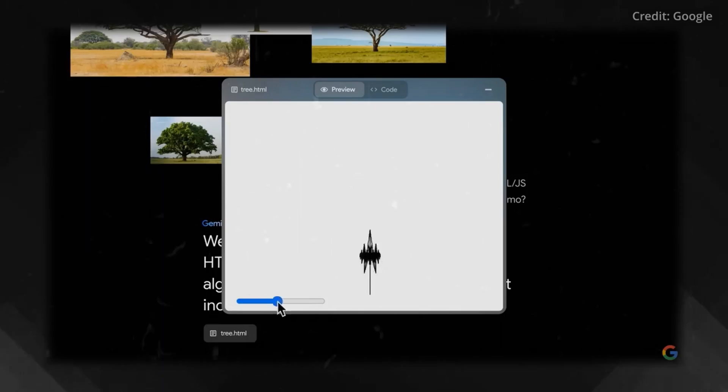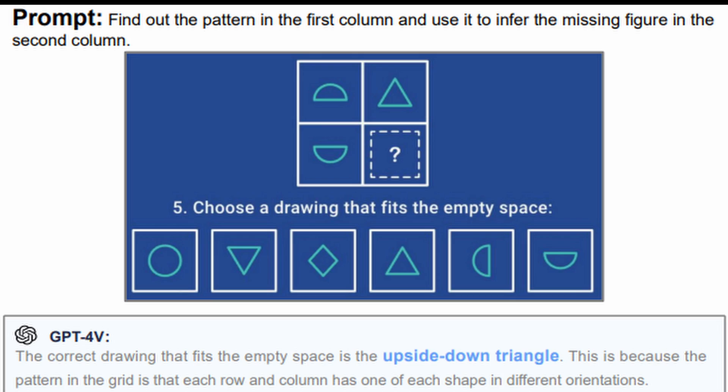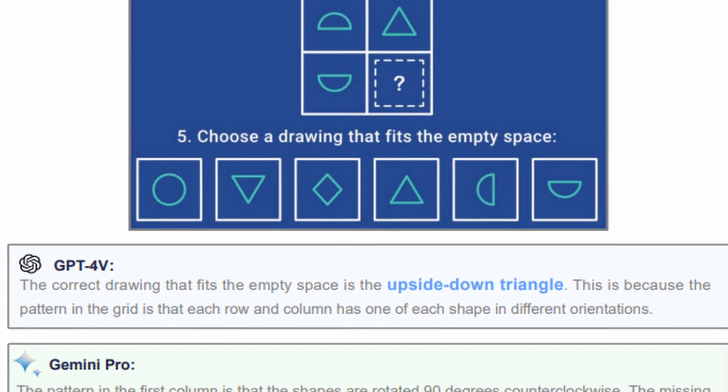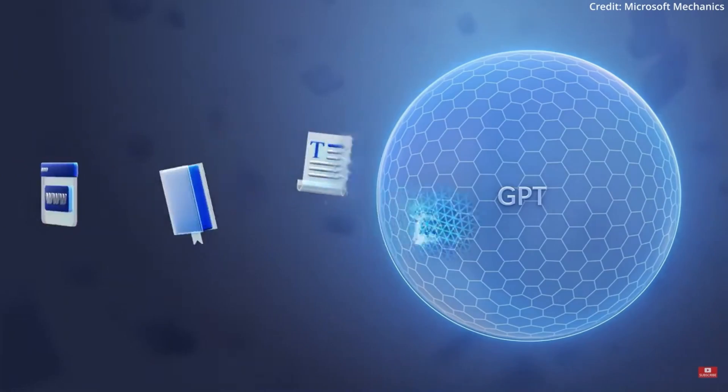In terms of integrated image and text understanding, both models show strong common-sense reasoning abilities, with Gemini Pro slightly lagging behind GPT-4V in pattern search tests, which are a crucial component of IQ testing.